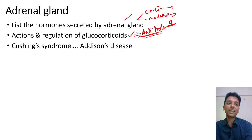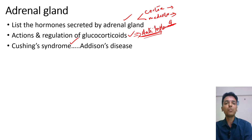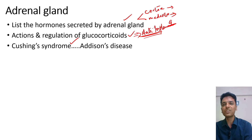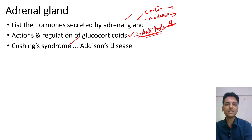Cushing's syndrome is repeatedly asked as a clinical case scenario — I cannot tell you how important this topic is. Features include centripetal obesity, moon face, striae on the abdomen, poor wound healing, and hyperglycemia, often in a patient on long-term steroids. They will ask you to identify the condition, explain the actions of the hormone involved, explain its regulation, and explain the physiological basis of the symptoms and signs.